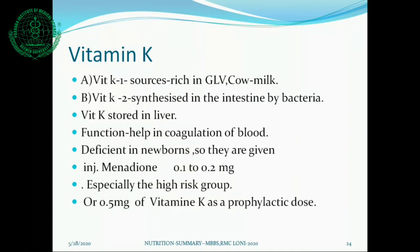Vitamin K exists in two forms: K1, rich in green leafy vegetables and cow's milk, and K2, synthesized in the intestine by bacteria. Vitamin K is stored in the liver. Its main function is helping in coagulation of blood. It is deficient in newborns, so they are given injection of menadione in the dose of 0.1 to 0.2 milligrams, or 0.5 milligrams as a prophylactic dose in high-risk groups.